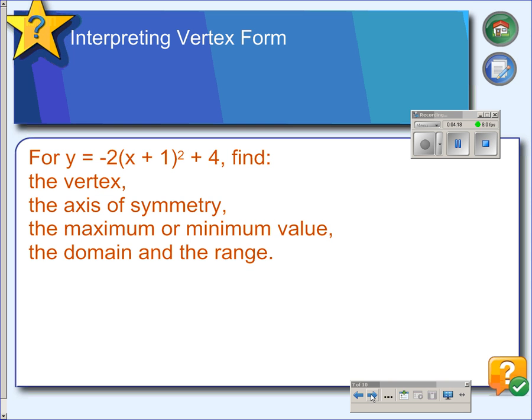Okay, so these are the main things that we should get from a translated function. We should be able to find the vertex. And in this function, we have a transformation that would go left 1 and up 4. So that transformation moves the vertex away from the origin, left 1 and up 4. So the vertex is at negative 1, 4. And the axis of symmetry would run right through the vertex, equal to the x value. So the axis of symmetry is x equals negative 1.